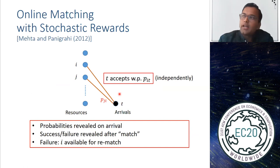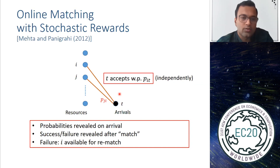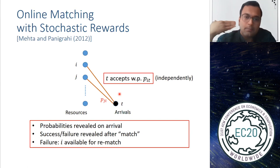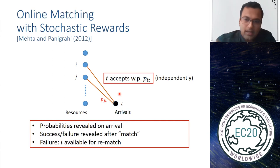This also appears in ride sharing — a driver could accept or reject a match offered by the platform — and in crowdsourcing and personalized recommendations. This prompted Mehta and Penegra to study online matching with stochastic rewards, where each edge has an associated probability. If you make a match between arrival t and resource i, then the match succeeds with probability p_{i,t}, an independent coin toss. On success you get a unit reward; on failure, resource i remains available for future rematches.